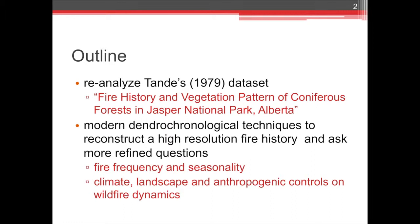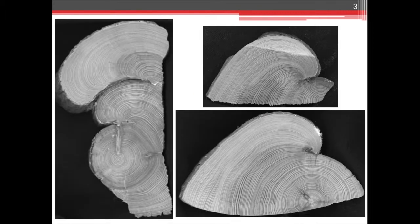With this more fine-scale reconstruction, I can ask questions that were not possible before — regarding fire frequency, fire seasonality, fire severity, and the fire-climate relationship and other vegetation dynamics. My dataset consists of about 400 cross-section samples, which were resurfaced and scanned at UBC and are now being processed at the University of Guelph. I'm mainly working with lodgepole pine and some Douglas fir samples — both species that are fire-adapted. These samples have pith and fire scar evidence, which will aid in our reconstruction of a mixed severity fire regime.